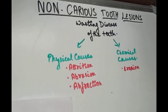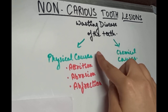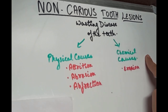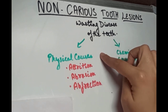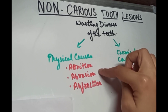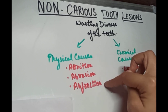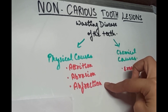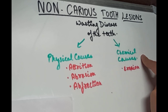The wasting diseases of the teeth can be caused due to physical causes or chemical causes. The wasting diseases due to physical causes are attrition, abrasion, and abfraction, and due to chemical causes is erosion. So first let's look at attrition.